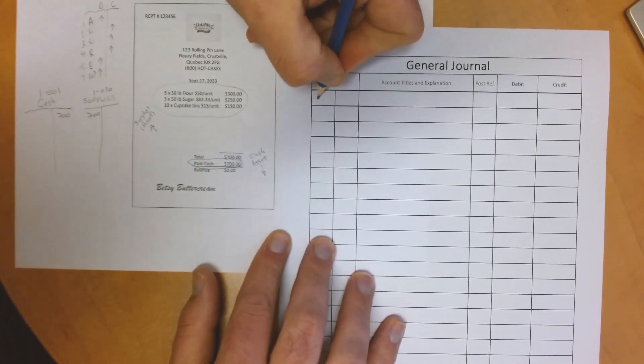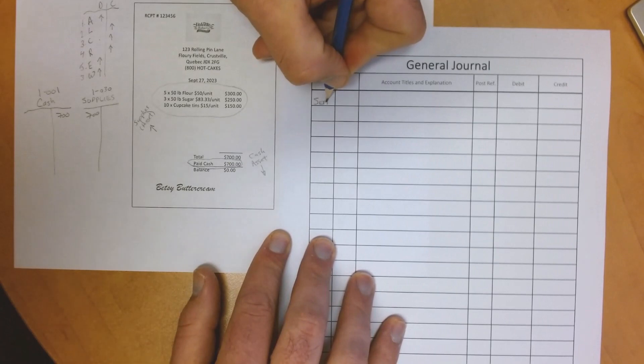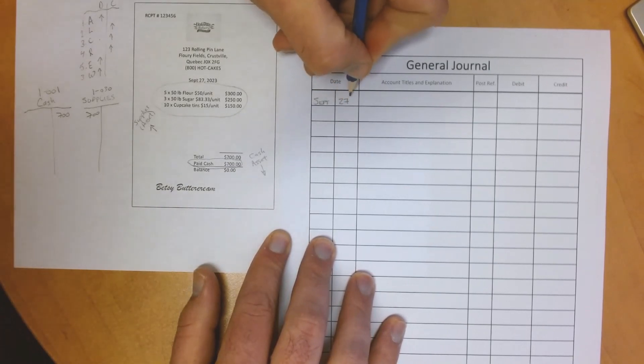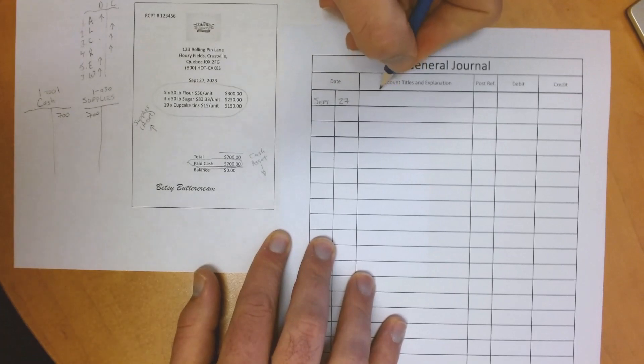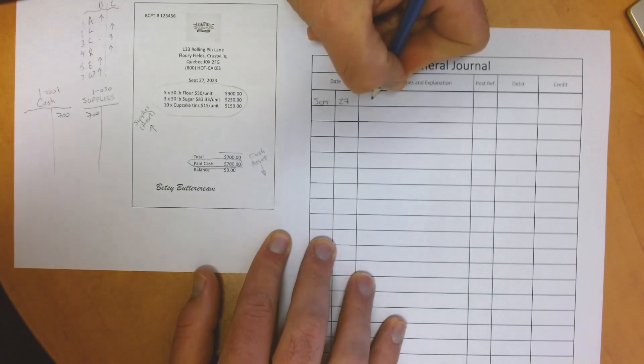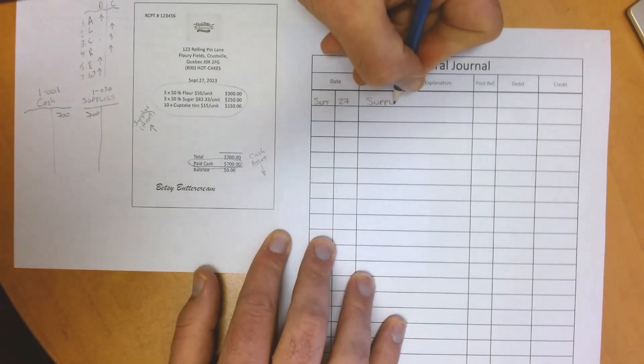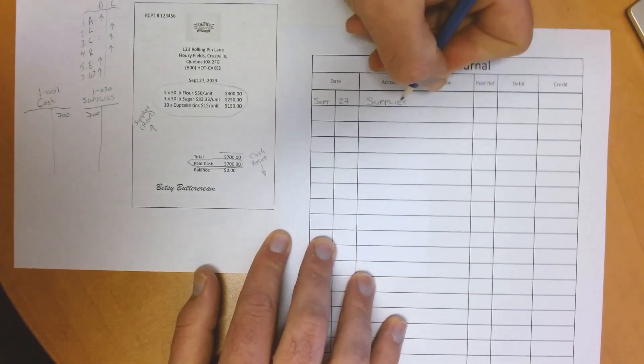Next, we need to add the date from our source document. Our debit entry typically goes first, which is the increase to supplies.